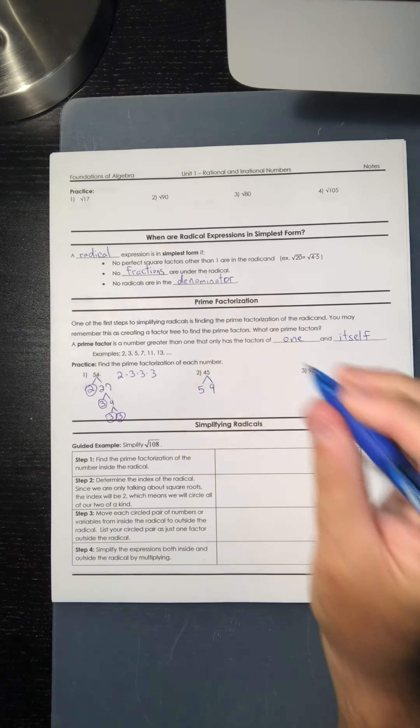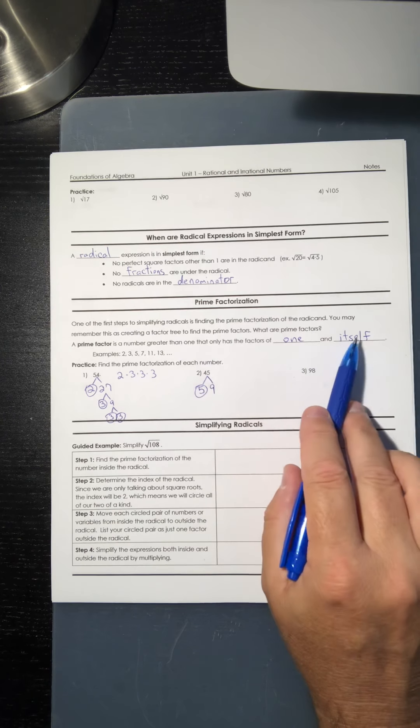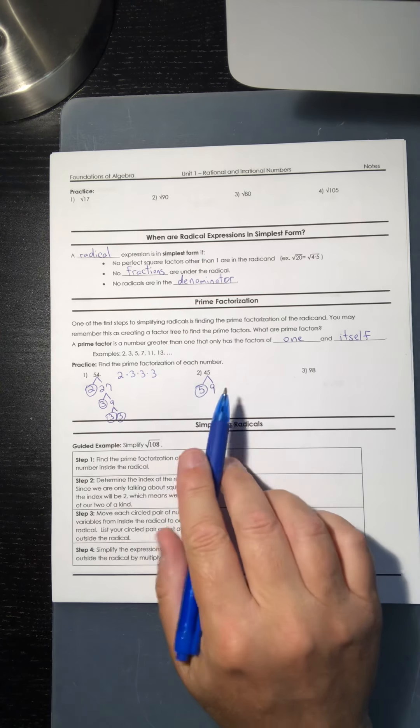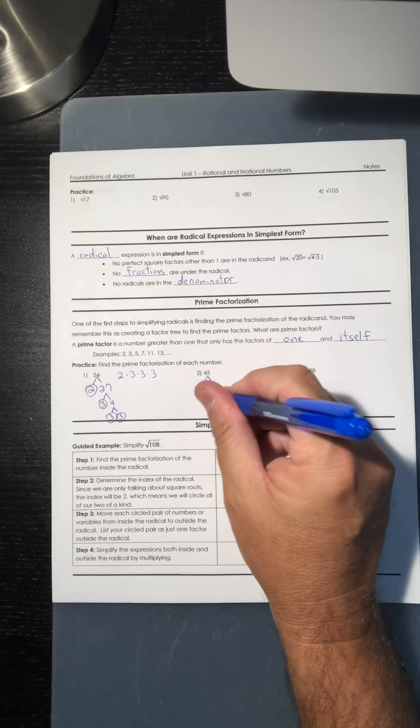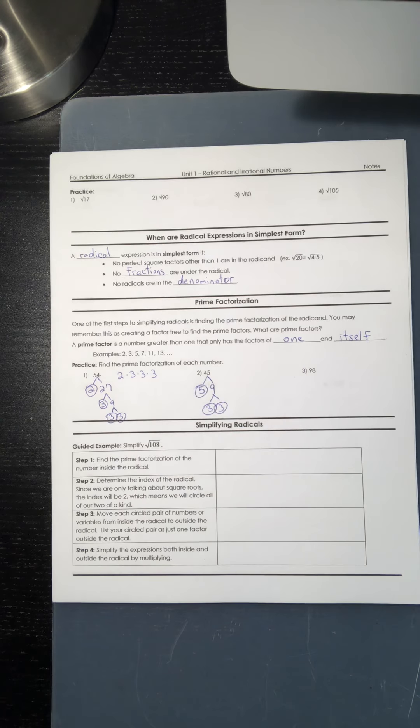Well, 5 is a prime number. The only numbers that go into it is 1 and itself, or 5, so that one's finished. I'm going to put a circle around it. Well, we just did 9 over here. We know 9 has the factors of 3 and 3, and 3s are both prime numbers, so I'm finished with that one.